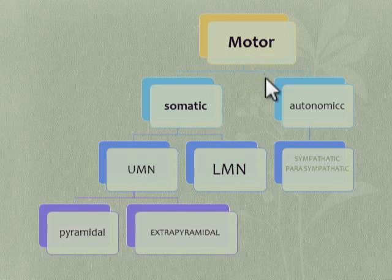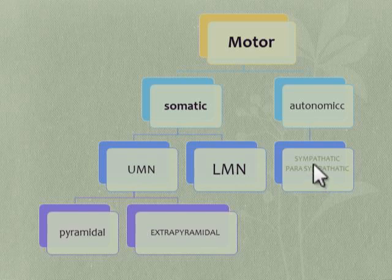The autonomic nervous system is of two types: sympathetic and parasympathetic. These control involuntary activities of the body. These are basically nerves that arise from the spinal cord and synapse with ganglia of the sympathetic trunk, then innervate different organs of the body, causing involuntary functions like defecation, urination, secretion of salivary glands, and secretion of enzymes.